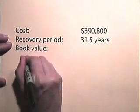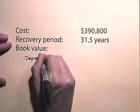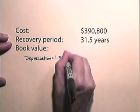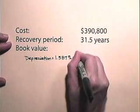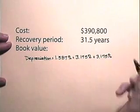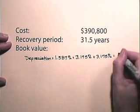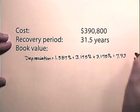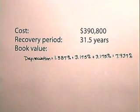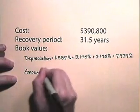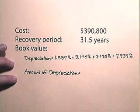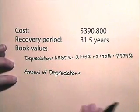So the depreciation for three years will be 1.587% plus 3.175% plus 3.175% which equals 7.937%. So now let's find the amount of depreciation, which will be 7.937% of $390,800.